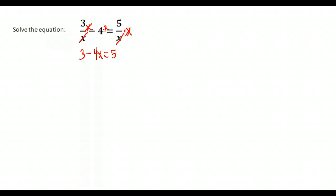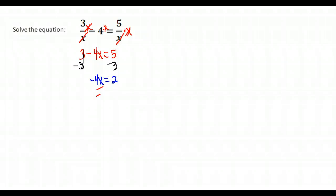This gives us a much simpler problem to solve. We isolate X by subtracting 3 from both sides — 5 minus 3 gives us 2 — and then divide both sides by negative 4, giving us a solution.